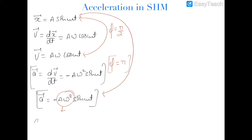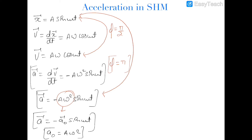This is the maximum value of acceleration and it is referred as a naught, so this is minus a naught sine omega t. This is the maximum peak value of acceleration. Now a naught is equal to a omega square, and you can also see that this a sine omega t is equal to x. So we can substitute the value of a sine omega t as x in this equation, and therefore the acceleration a will be equal to minus omega square x.